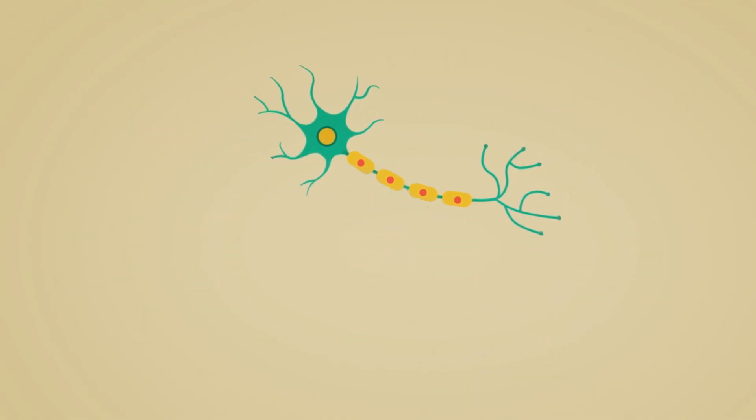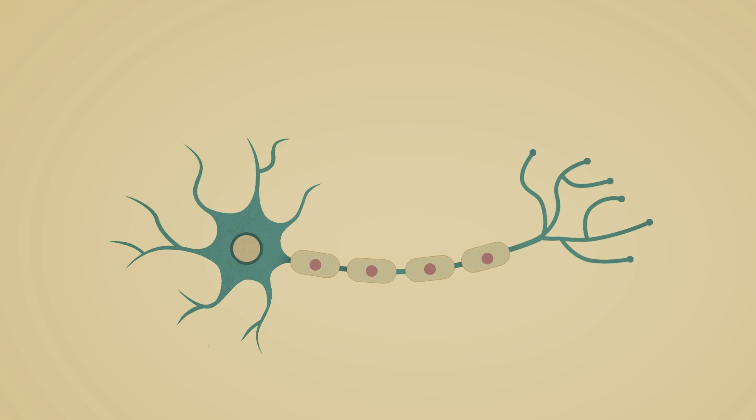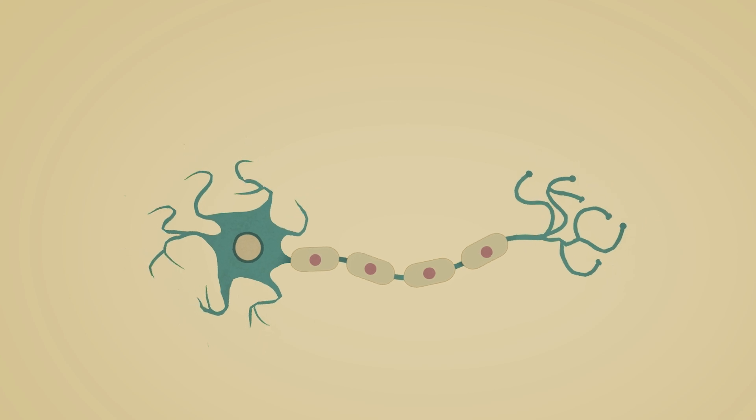When a nerve cell dies, it cannot usually be replaced. If something damages or destroys the nerve cells, they can no longer do their job. This is what happens in dementia.